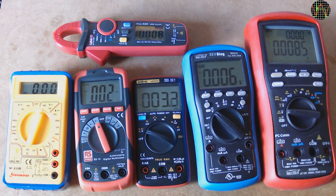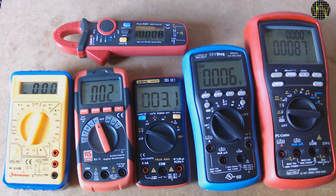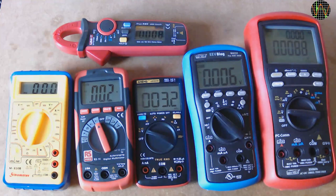Some are true RMS and some are averaging. How to tell? Well, the true RMS meters make very sure to remind you by proudly writing true RMS somewhere on the front. Although sometimes it is just written as TRMS.